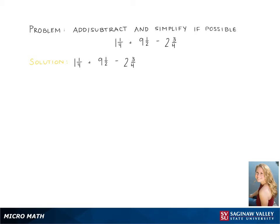Here we are going to add and subtract mixed numbers and simplify if possible. So the problem is 1 and 1 fourth plus 9 and 1 half minus 2 and 3 fourths.